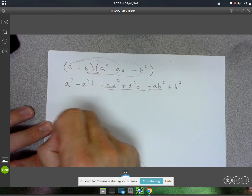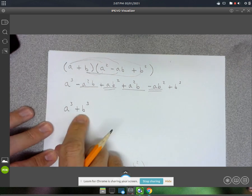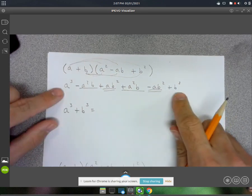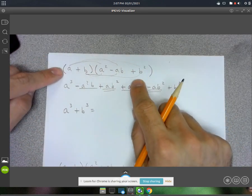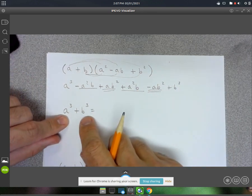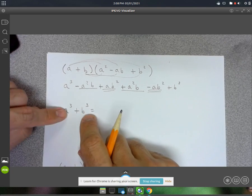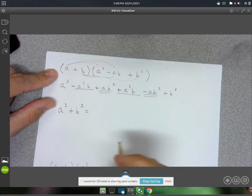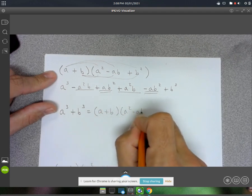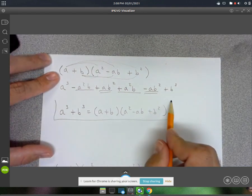So what that tells us is that a³ + b³, the sum of cubes, is going to factor. The way we're going to use it is we'll take a binomial expression - something to the third power plus something to the third power - and use this to write it in factored form. It's going to be (a + b)(a² - ab + b²). That's our first formula or first identity.